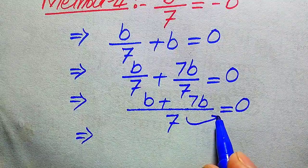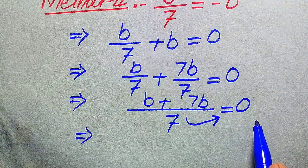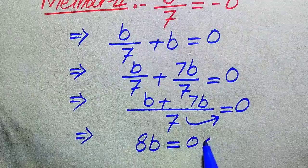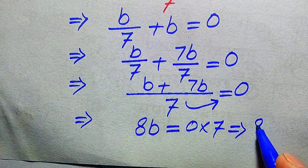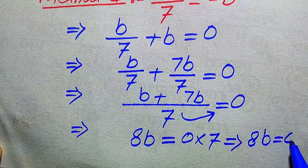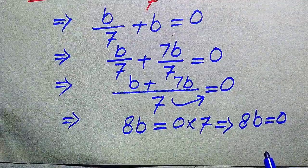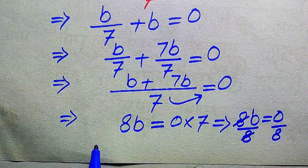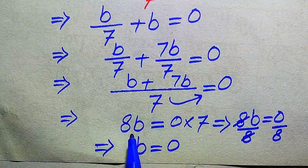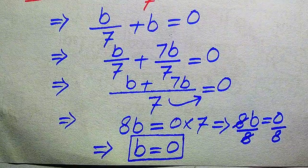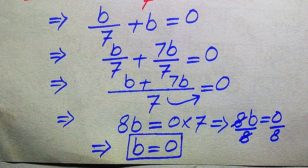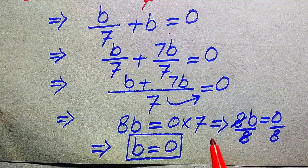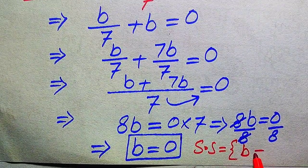We move the 7 to the right hand side, where it multiplies, and b plus 7b gives 8b equals 0 multiplied by 7. This implies 8b equals 0. To find the value of b, we divide both sides by 8; the 8 cancels out and we get b equals 0 divided by 8, which equals 0. This is the same value of b obtained in the first method. Since we already verified it in the first method, the solution set is b equals 0.